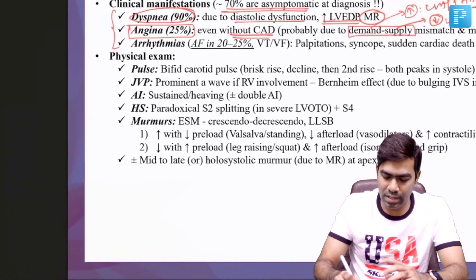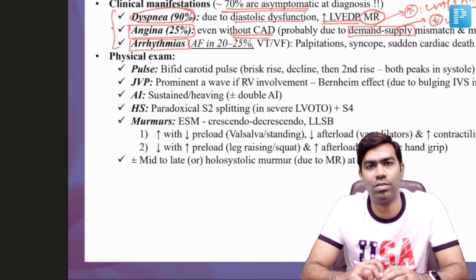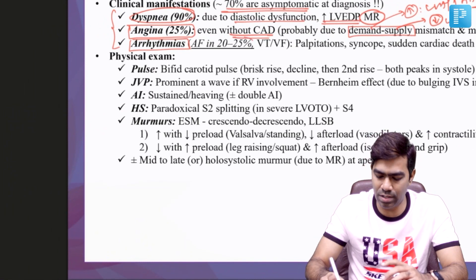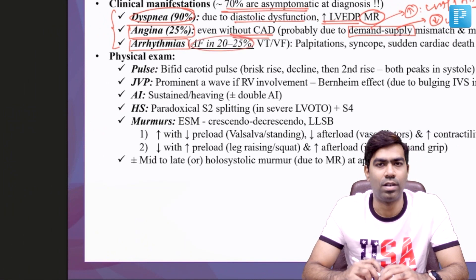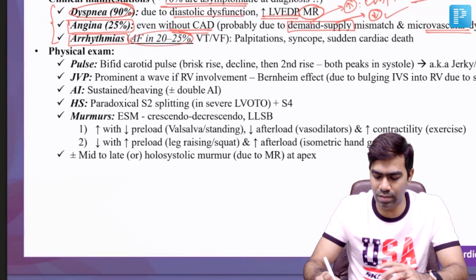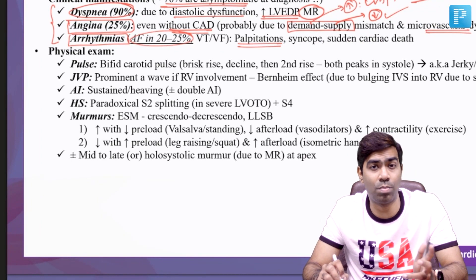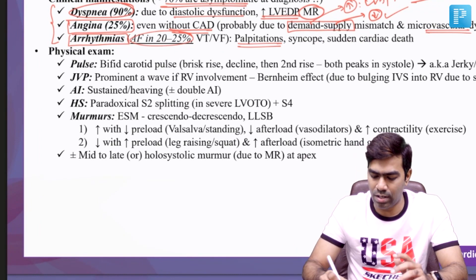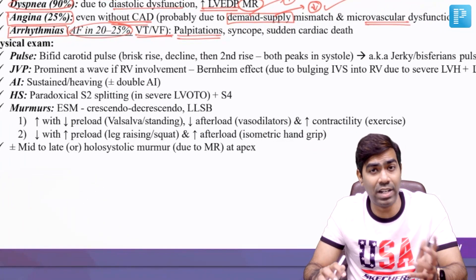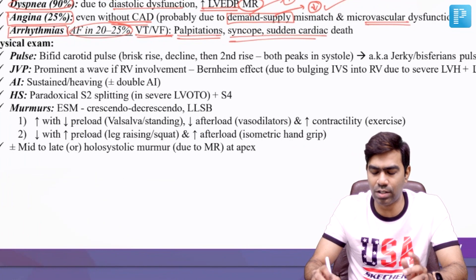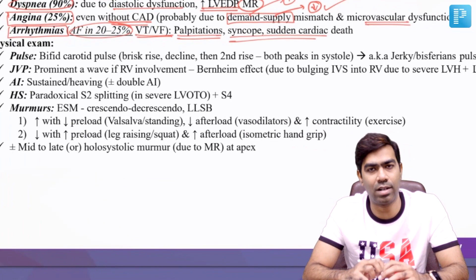Patients can develop arrhythmias as well. The most common arrhythmia in HCM is atrial fibrillation, occurring in 20 to 25 percent of cases, which can result in palpitations and thromboembolic manifestations. Remaining patients can develop VT/VF, which can result in syncope and sudden cardiac death.